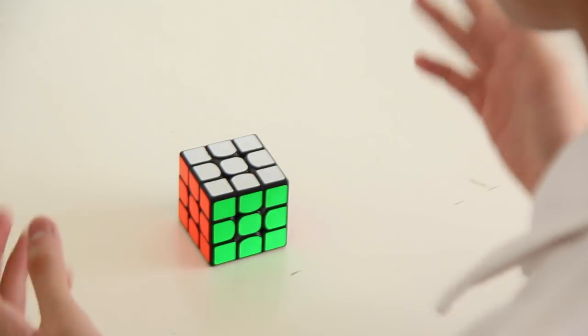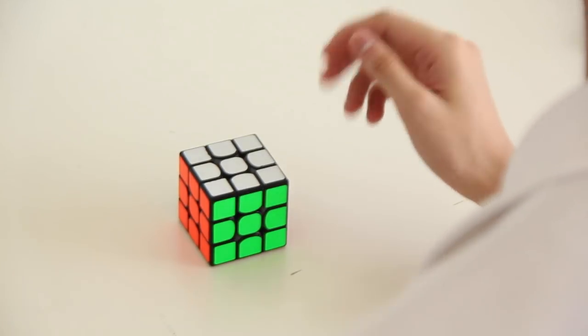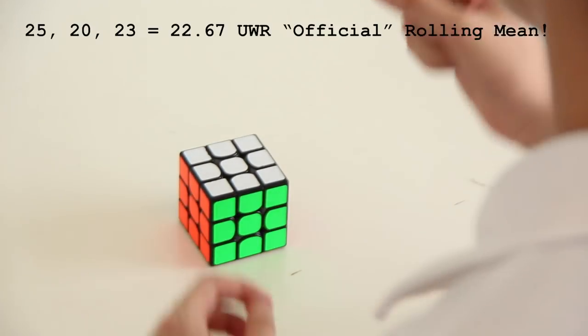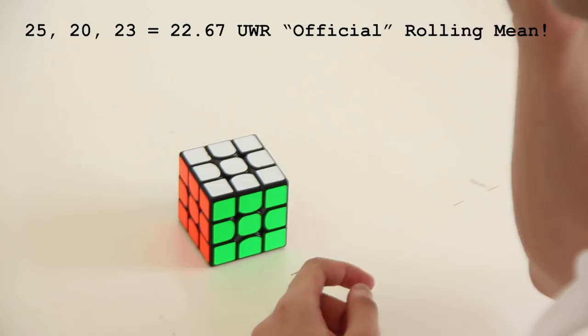But having a 23 gives me the unofficial world record for the best rolling mean officially, which is 25, 20, and 23. What's that? 22.67? Yeah, I think so.